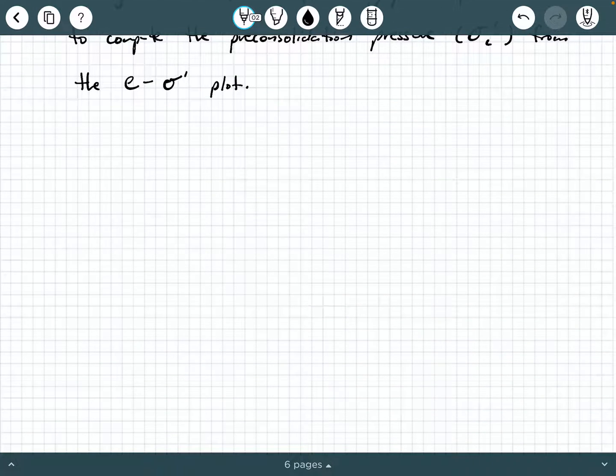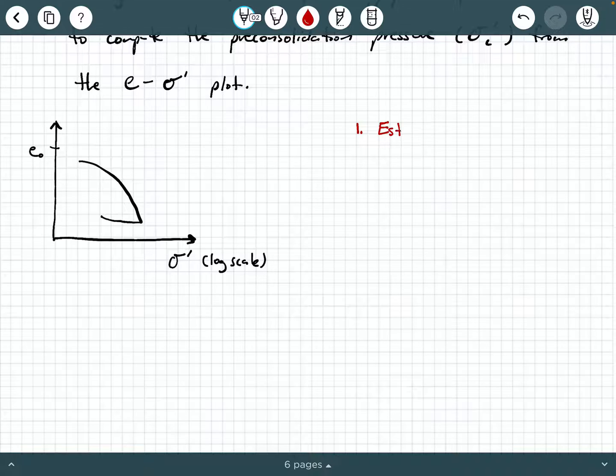So Casagrande in 1936 developed a graphical procedure to compute the pre-consolidation pressure, which we call sometimes sigma prime C from the e sigma prime plot. And remember we're using sigma prime on a log scale. So what Casagrande said was the following and I'm going to go ahead and resketch a plot of this over to the side so we can do this together graphically. So here's a sigma prime on a log scale and here's e naught and then here's a general shape right there.